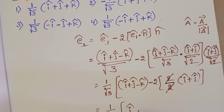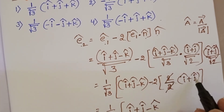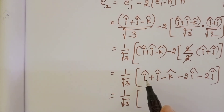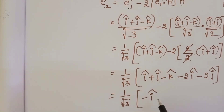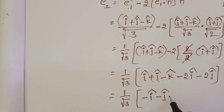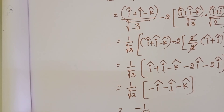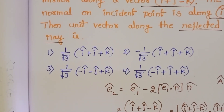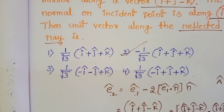So (1/√2) × (î + ĵ - k̂) multiplied by minus 2 gives minus 2î - 2ĵ. Then: î - 2î = -î, ĵ - 2ĵ = -ĵ, and -k̂ remains. Taking minus common: -1/√2 × (î + ĵ + k̂). Checking the given options, the answer is -1/√2 × (î + ĵ + k̂), so the 2nd option is the correct answer.